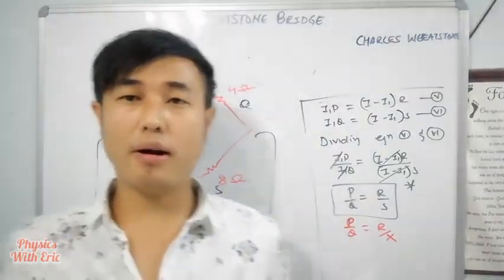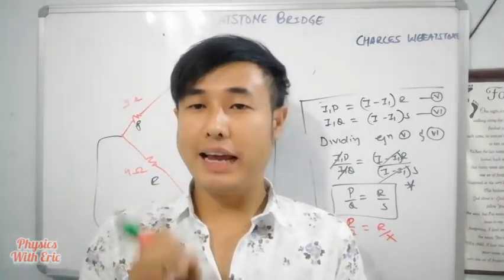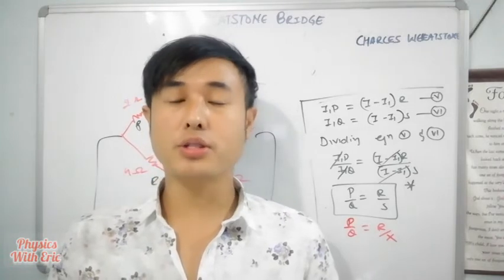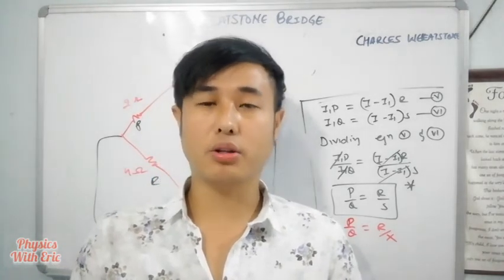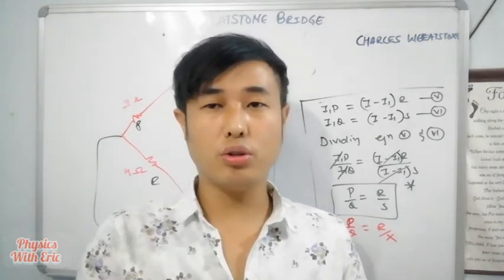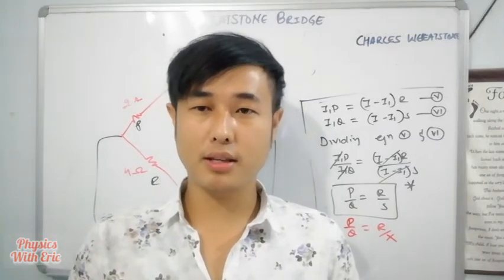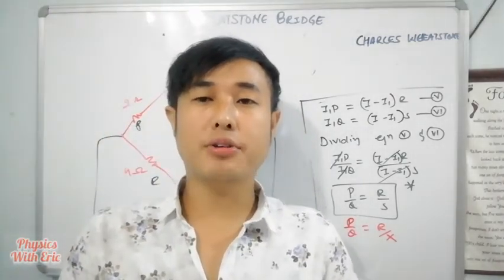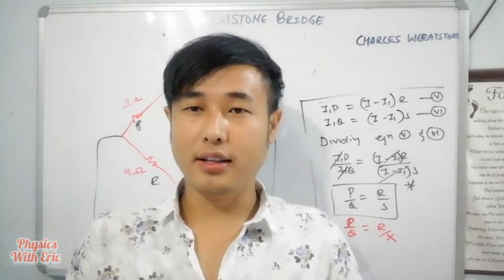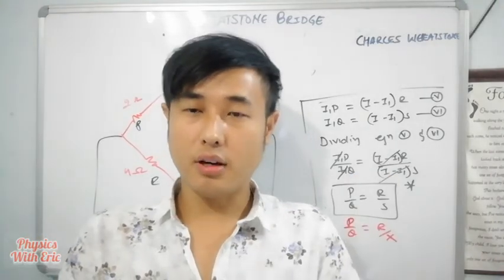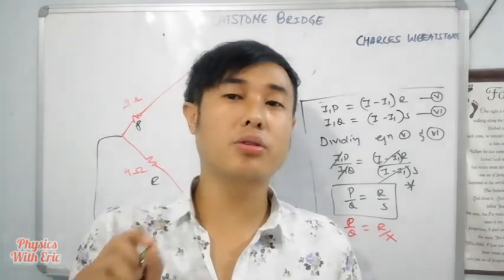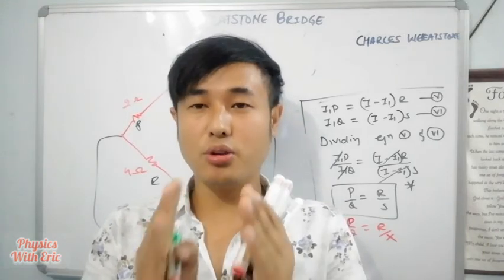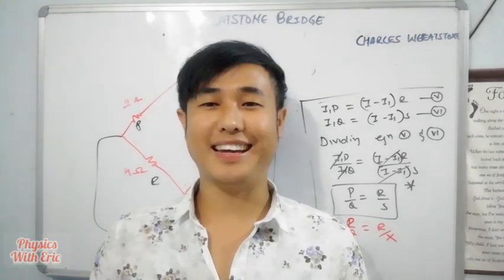So this is all about the Wheatstone Bridge. The Wheatstone Bridge is used to find the value of unknown resistance in an accurate way. This method is accurate because it uses a resistance box to control values, and when balanced, the internal resistance effects are negligible and current through the galvanometer is zero — making it a reliable method to find unknown resistance. I hope you all enjoyed my video, thank you for watching and see you in the next video.